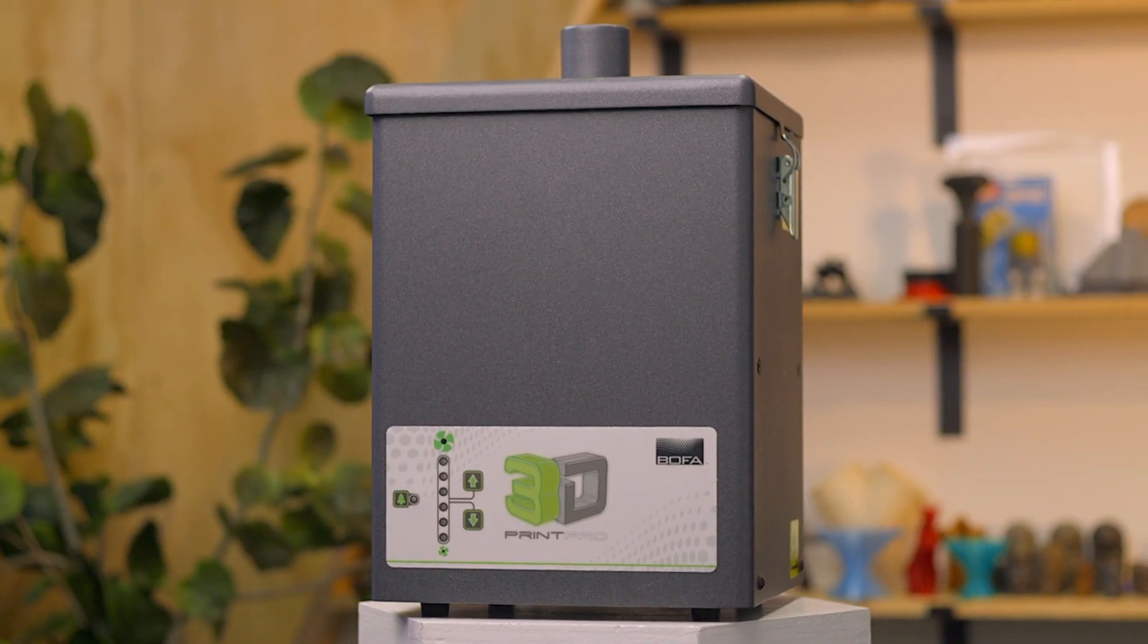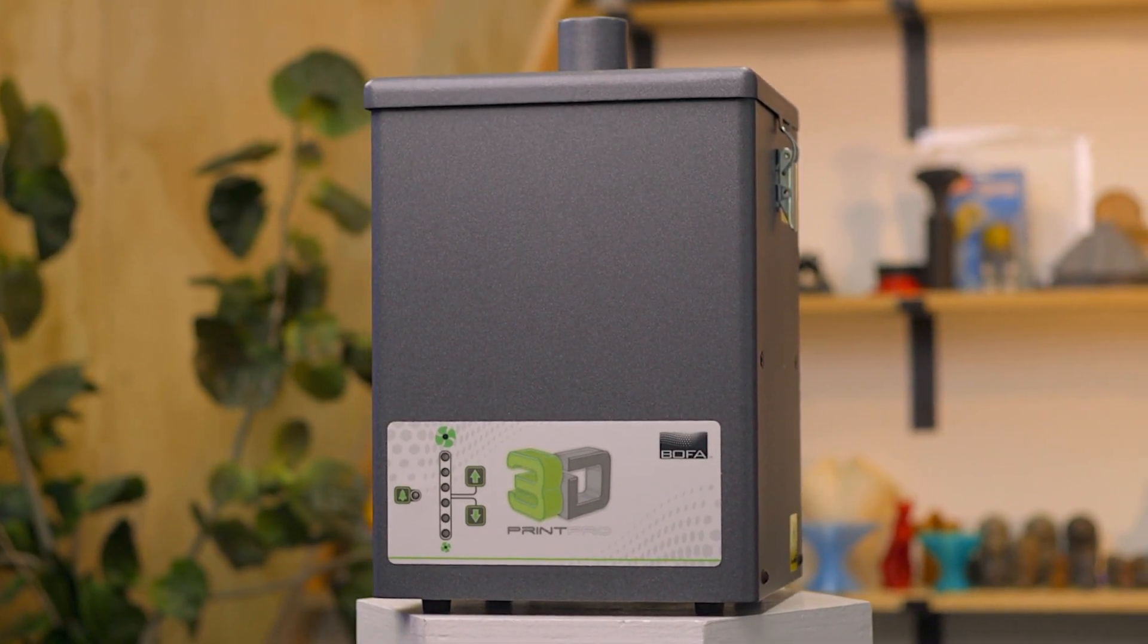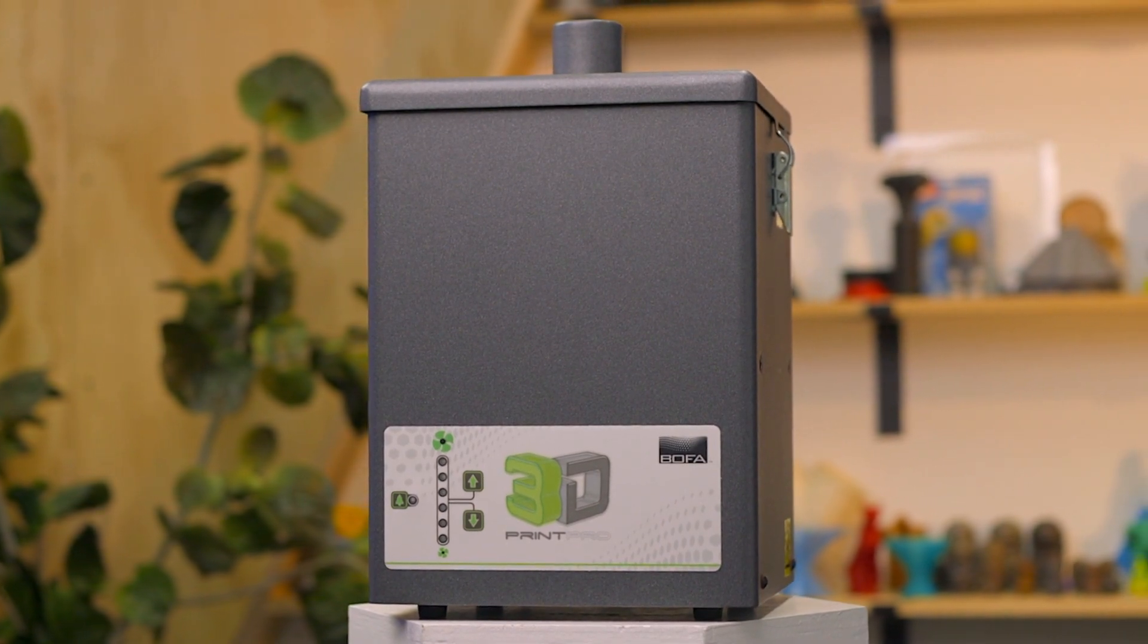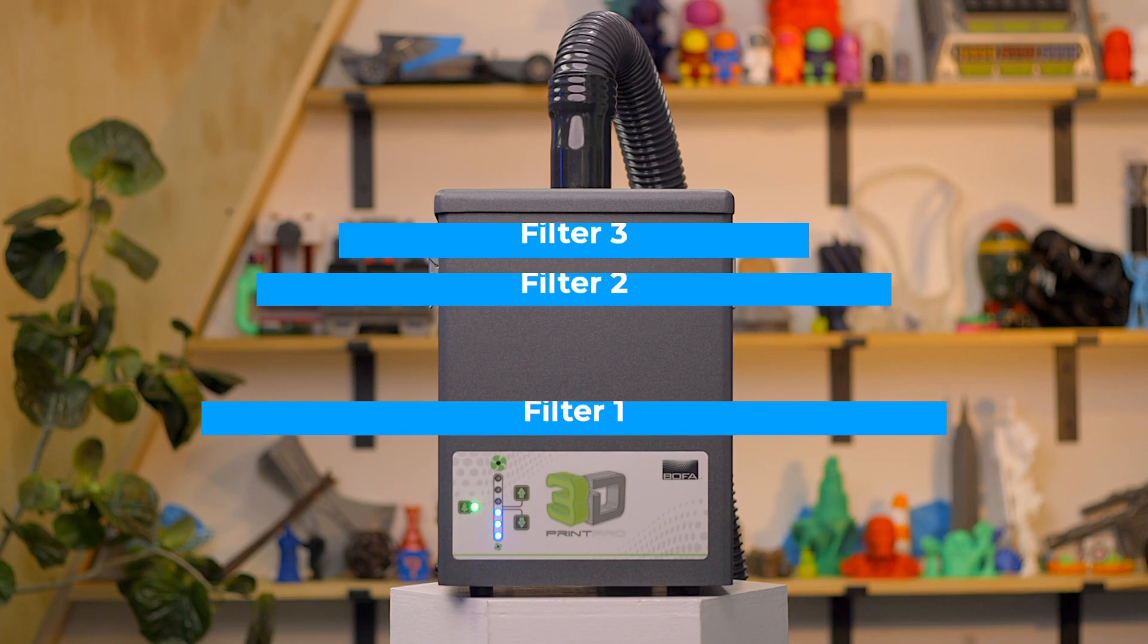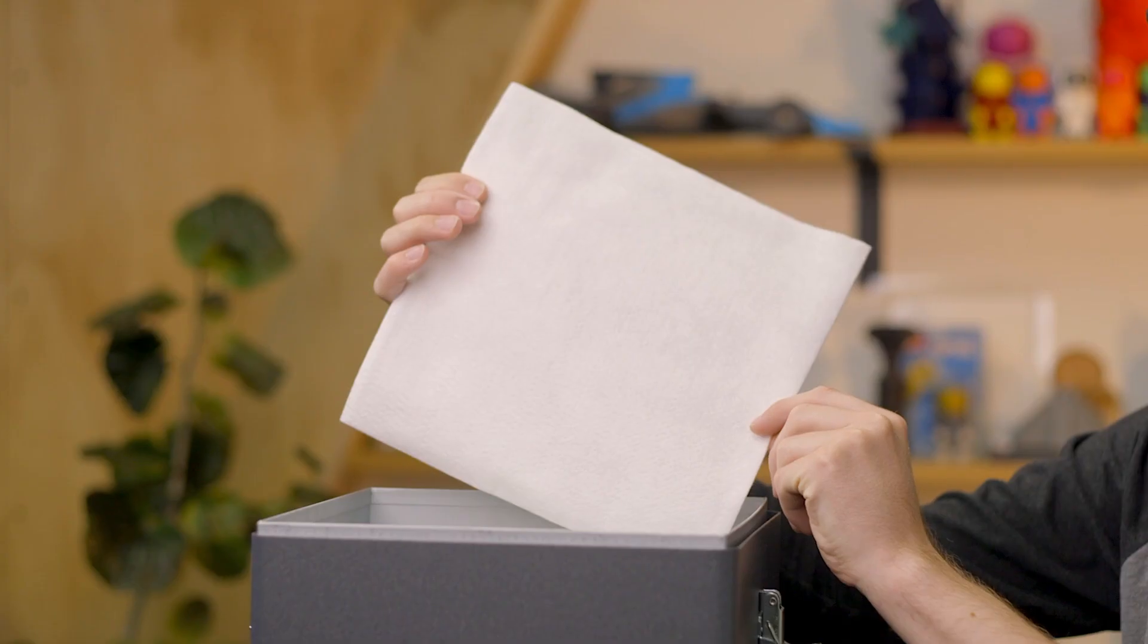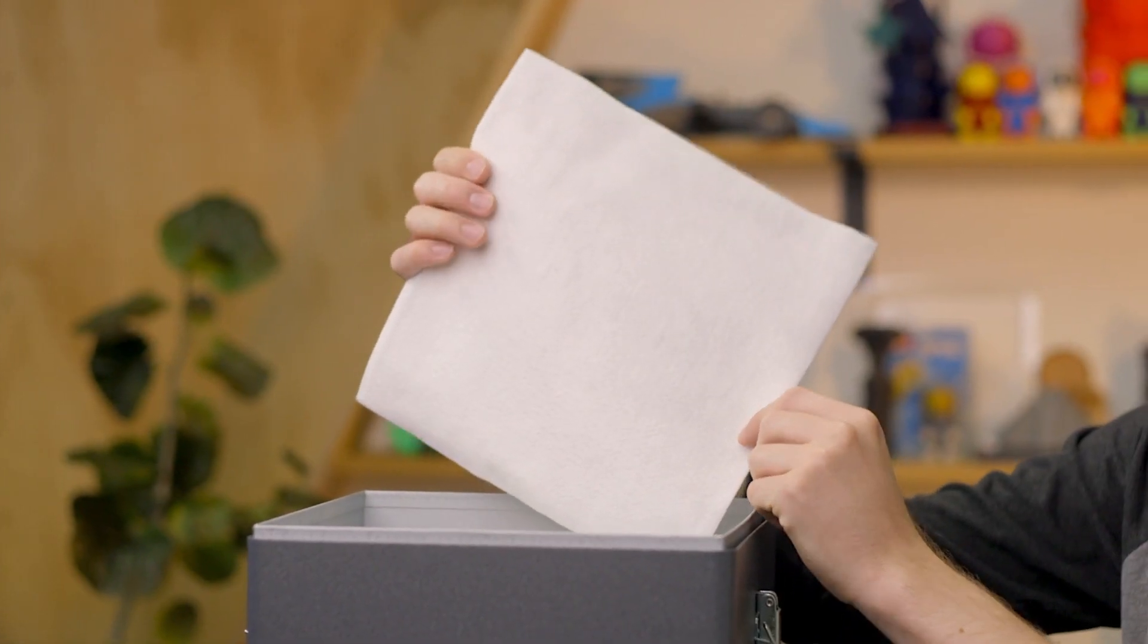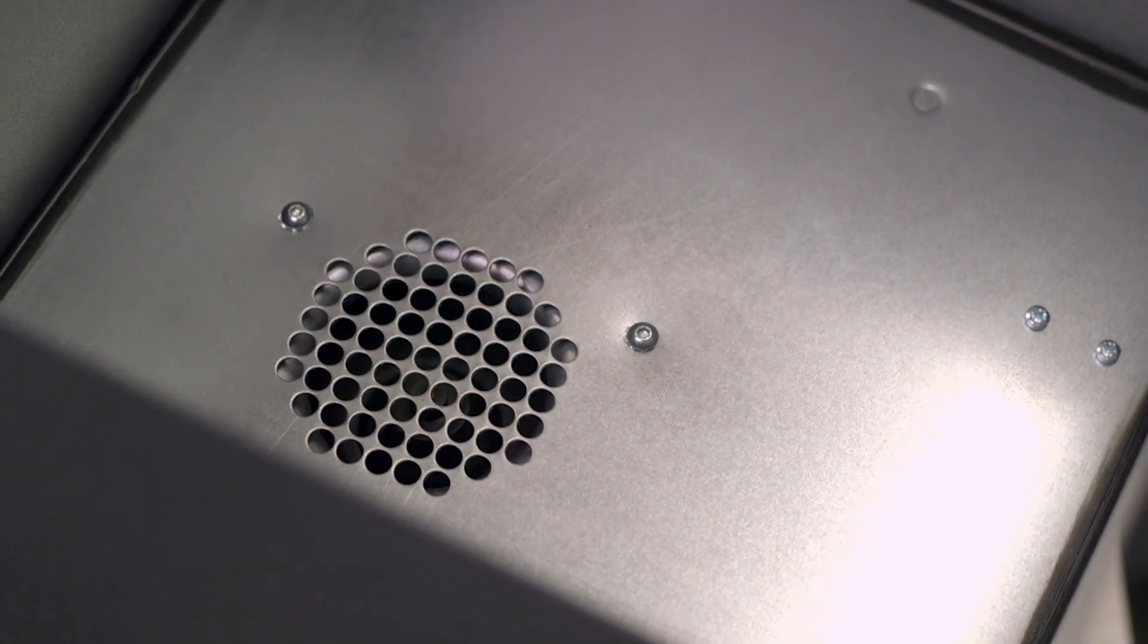The BOFA 3D Print Pro 3 is a purpose-built filtration powerhouse. Specifically designed for 3D printers, the system has multiple levels of filters to pull in particulate and fumes from the air and return the filtered air back to you. Air moves through the first layer and removes larger particles like dust and debris, pulls through a second filter to remove ultra-fine particles, and a final filter captures fumes.